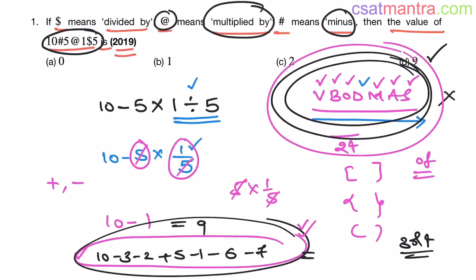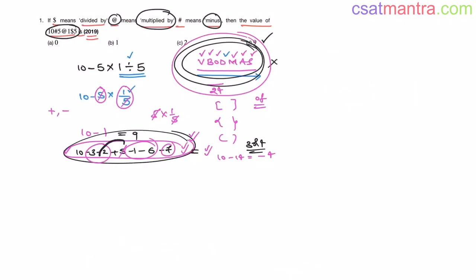I have observed some of the aspirants are still applying V BODMAS rule for these kind of calculations. You no need to apply my friends. You can simply calculate it. See minus 3 minus 2 minus 5 minus 5 plus 5. They get canceled out. Here minus 7 minus 7 minus 14. 10 minus 14. This is minus 4.